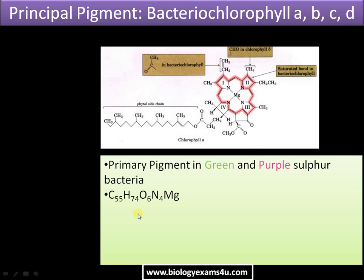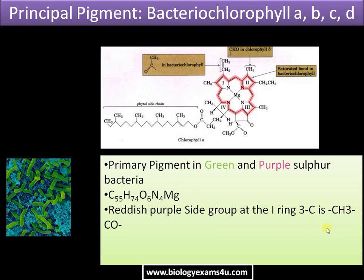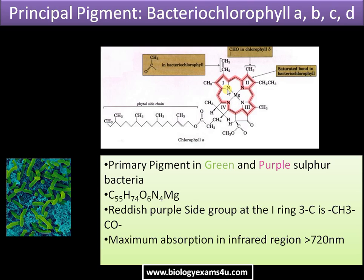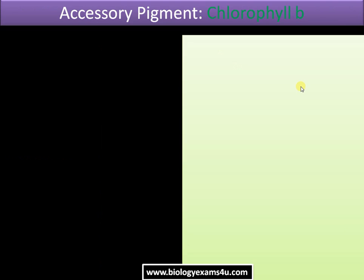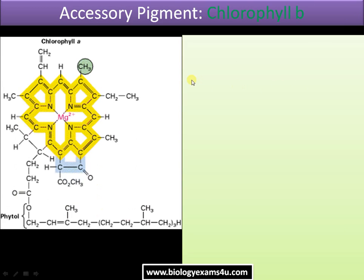The formula of bacterial chlorophyll is C55 H74 O6 N4 Mg. It is a reddish-purple pigment. At the CH3 position in the first ring it has a CH3–C double bond. Maximum absorption is in the infrared region, greater than 720 nanometers. Moving to accessory pigments: chlorophyll b is present in blue-green algae and all green plants.